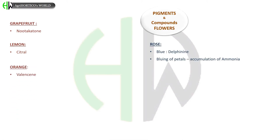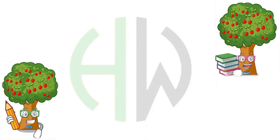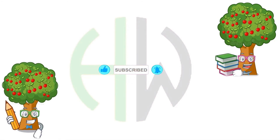Pigments and compounds in flowers: In rose, blue color is due to delphinine. Blueing of petals is due to accumulation of ammonia. If any pigment or compound was missed, please let me know in the comments. In the next video, let us see the principal compounds and alkaloids present in all plantation crops, medicinal, spices and aromatic crops.